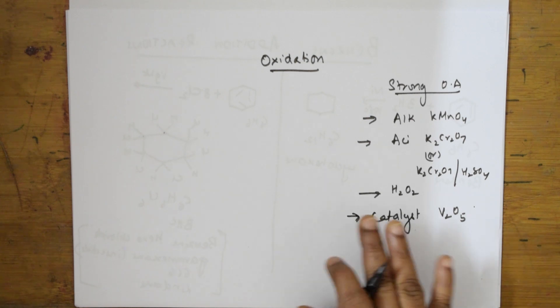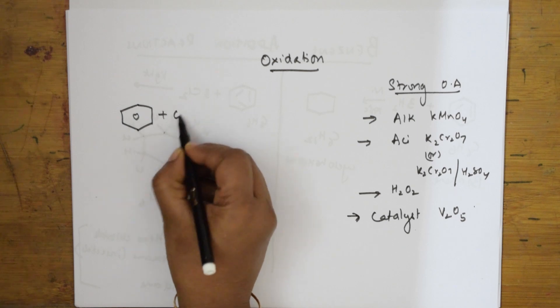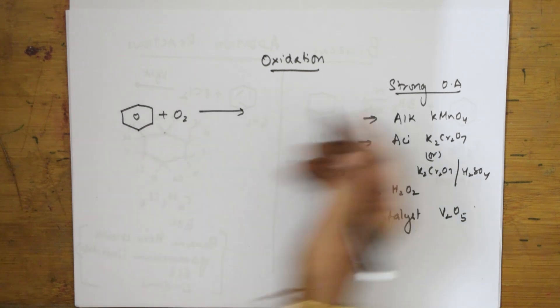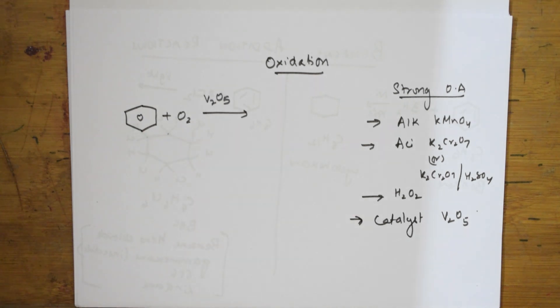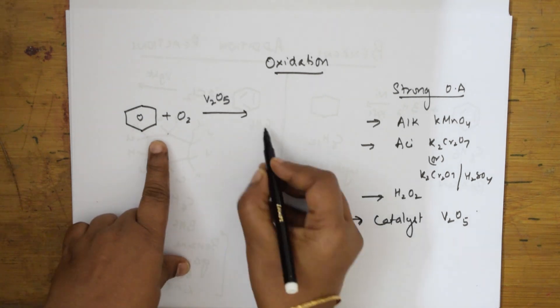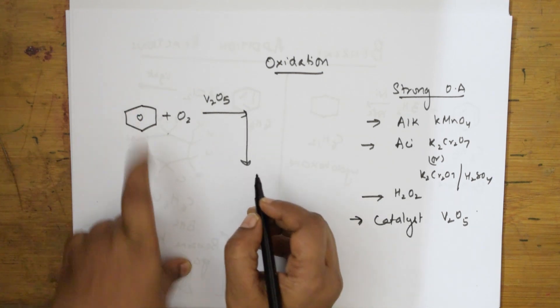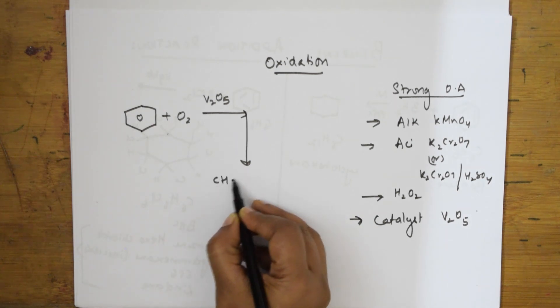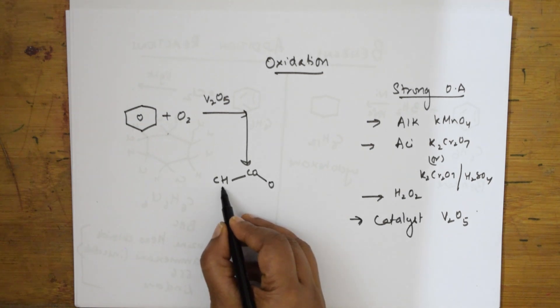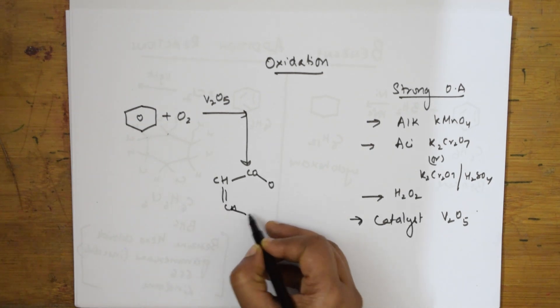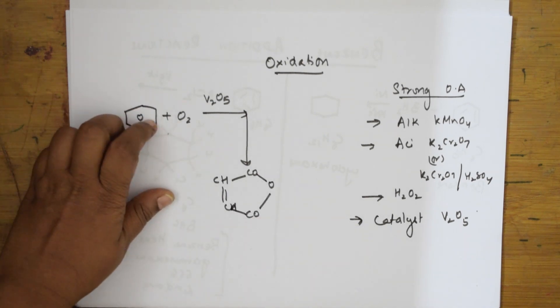In the presence of these, benzene undergoes oxidation reactions. Oxidation is addition of oxygen. I am using oxidizing reagents, this is the catalyst. When you are adding oxygen to this, the bond breaks and it forms.